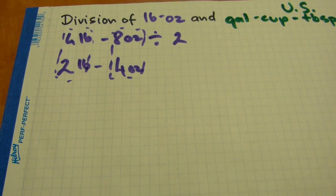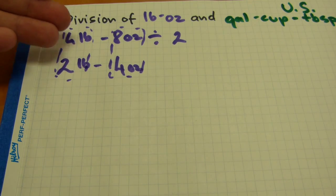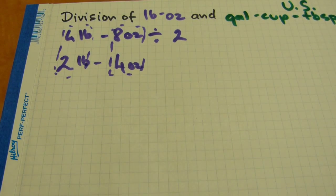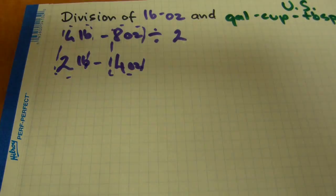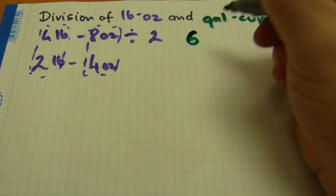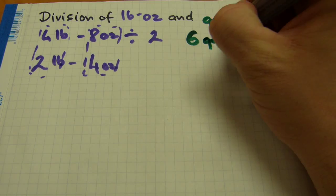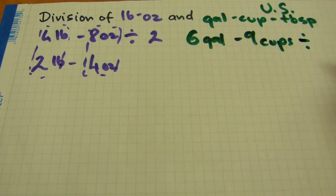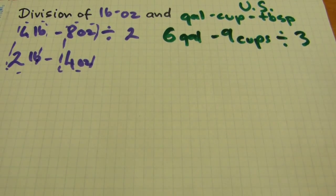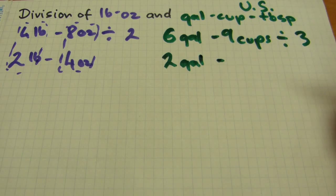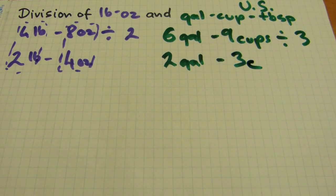Division starts at the left and works to the right — I'll explain more about that in a minute. Let's do another one with gallons and cups. How about 6 gallons and 9 cups divided by 3? It's easy again because 3 is a factor in both 6 and 9. So 6 divided by 3 is 2, and 9 divided by 3 is 3. The answer is 2 gallons, 3 cups. Fairly straightforward.